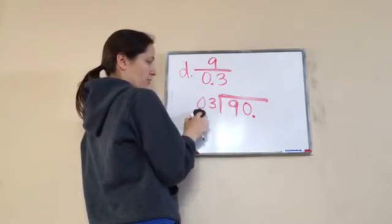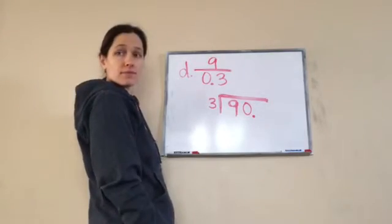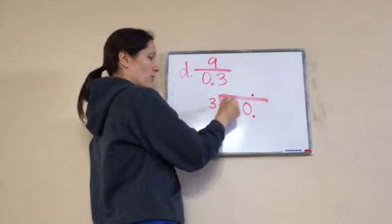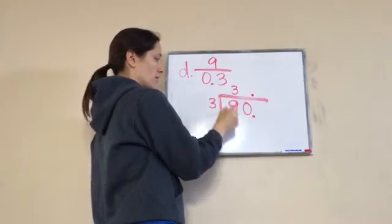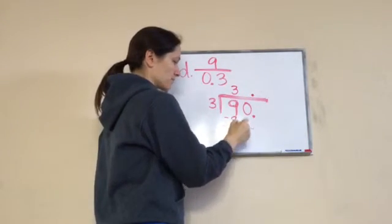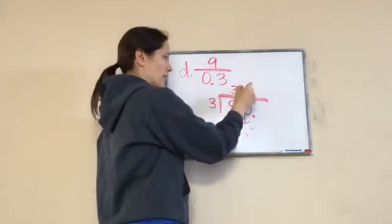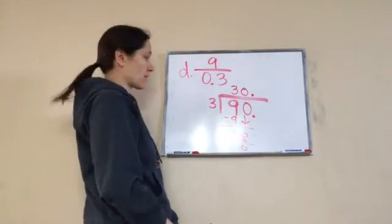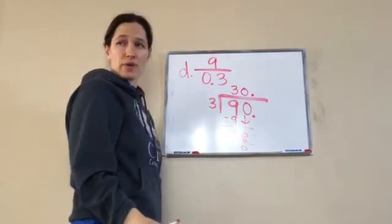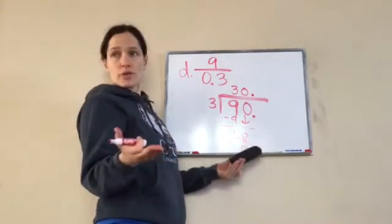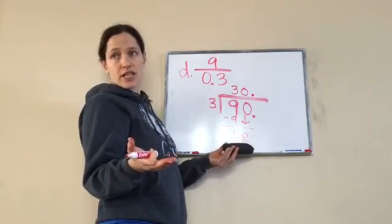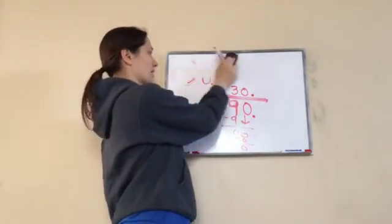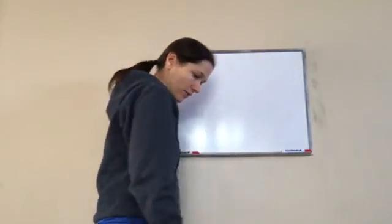So now your problem is 0.3, which is just 3, goes into 90. I'm going to move my decimal up right here. 3 goes into 9, 3 times. 3 times 3 is 9. Bring that 0 down. 3 goes into 0, 0 times. 0 times 3 is 0. And there you go. 30 is my answer. You see why we went on and did that one together? Yeah. Because you would not have known what to do. It didn't ever teach you. So I wanted to be able to teach that to you because you've never learned it yet. So that is D from your lesson practice that will help you out. That is lesson 49.